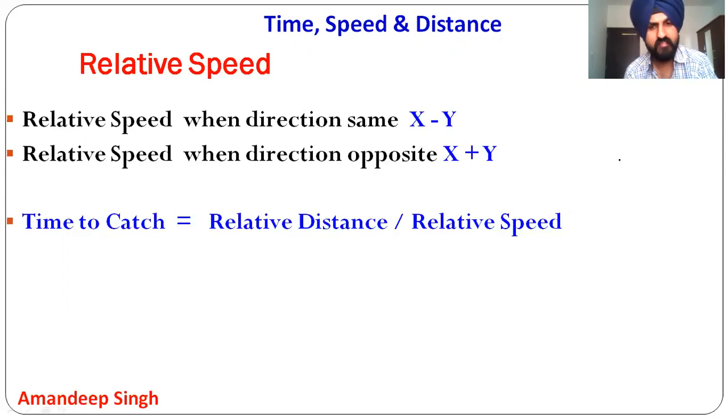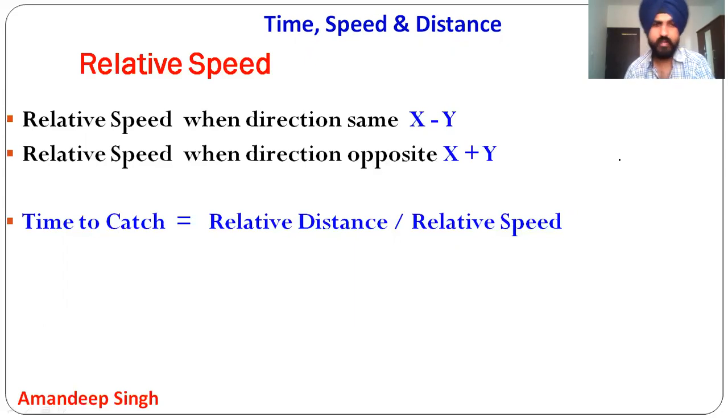When the direction is opposite, we add speeds. Time to catch = relative distance divided by relative speed. This is the basic concept of relative speed.